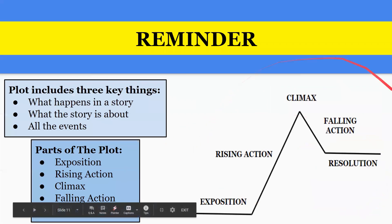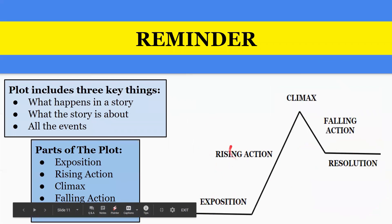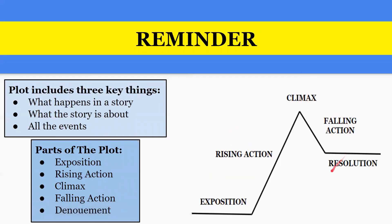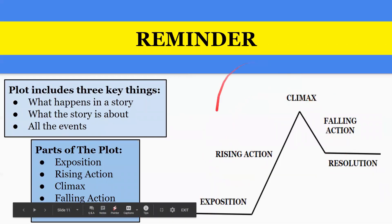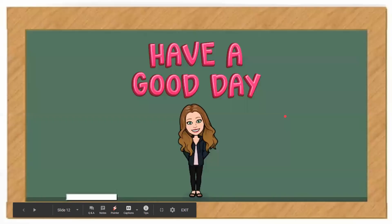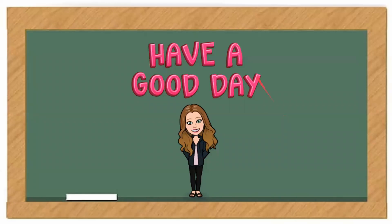And this is a plot line which you can use to map out the plot. If you were working on this, you would write down each of these terms, and then you could write down what was the exposition, what was the rising action, right next to the terms. So then later on you can figure out what the story is about and have all the main events outlined in front of you. I hope you enjoyed this video and have a great day.